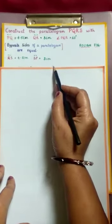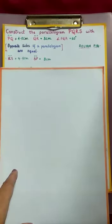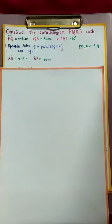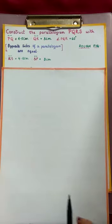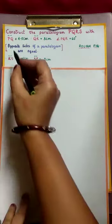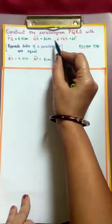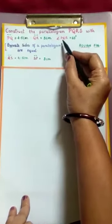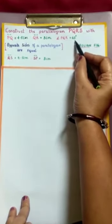Now we got all 5 measurements. Using these 5 measurements, let us construct a parallelogram. Before that, we draw the rough figure. They are given here: PQ 4.5 cm, QR 3 cm, angle PQR is 60 degrees.